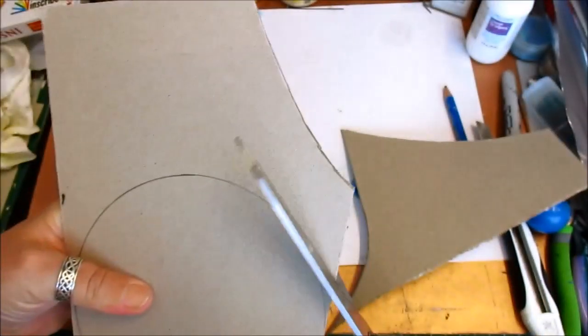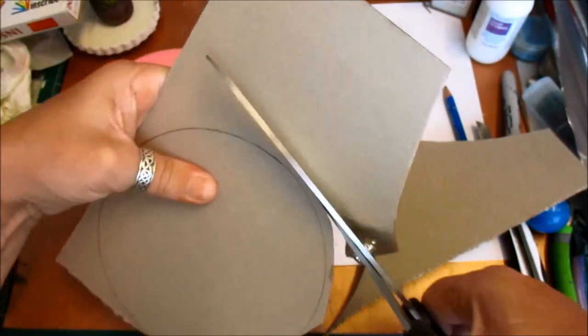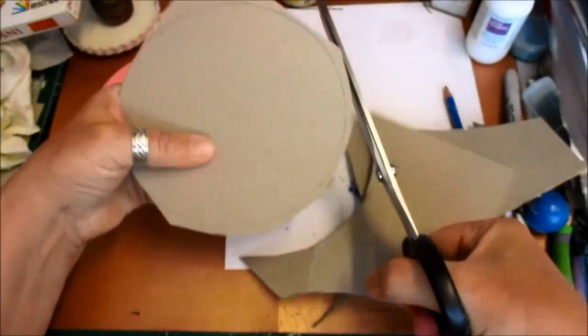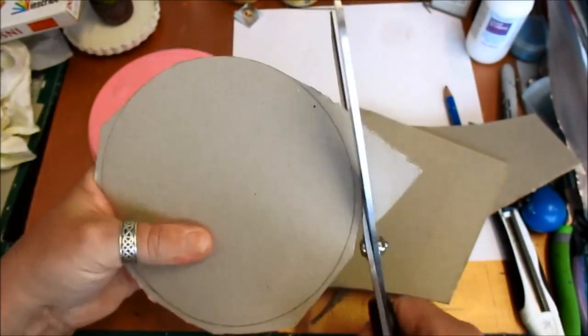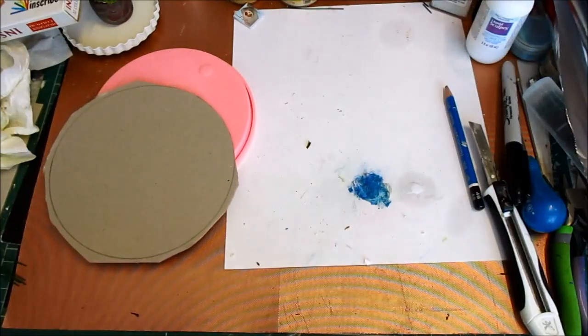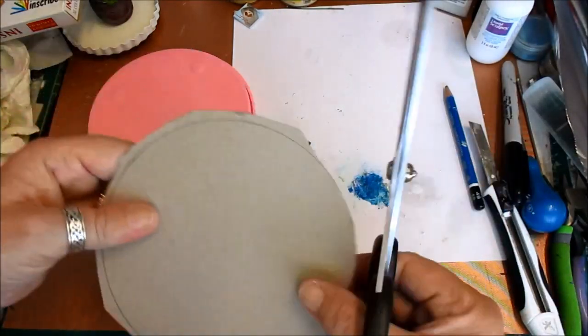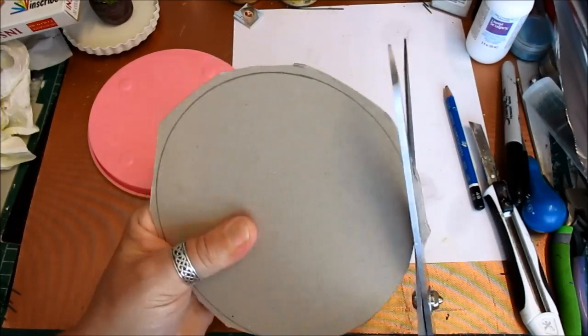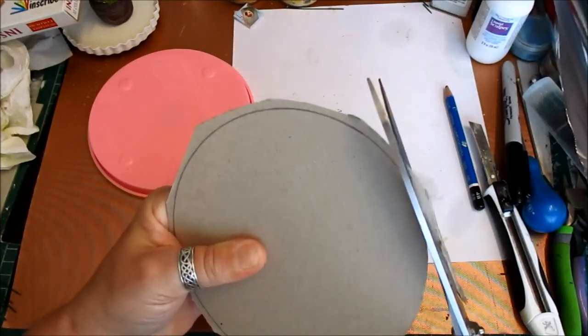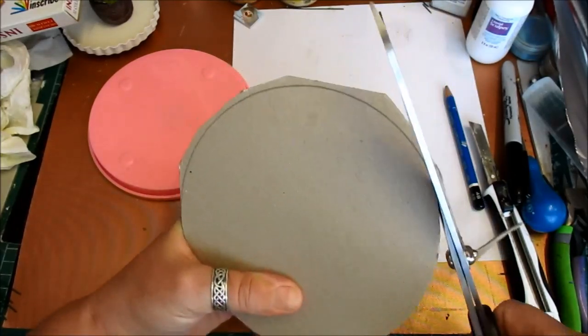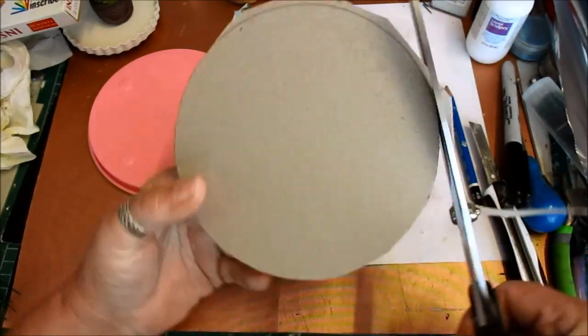Now easiest way is to cut off all your excess first and it just makes it so much easier. Now we save that size because I can get discs out of that so we don't throw anything away. I have a box at the side of me that I put it all in. This doesn't have to be perfect as long as it covers the area that I need it to cover.